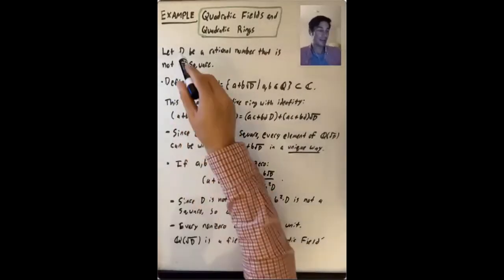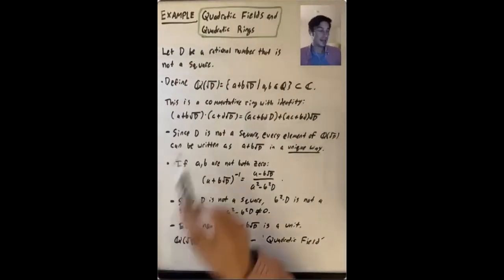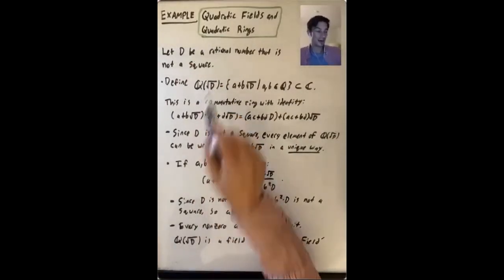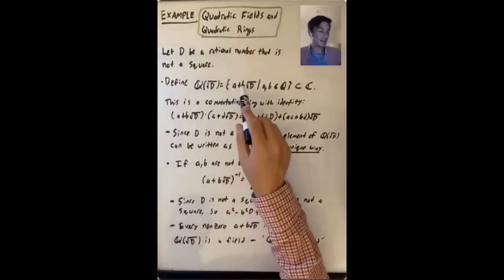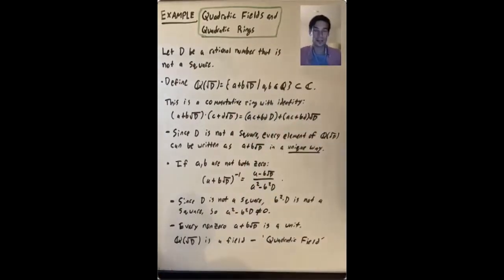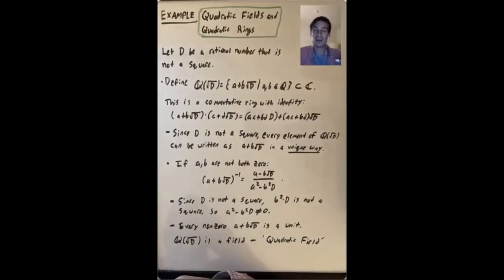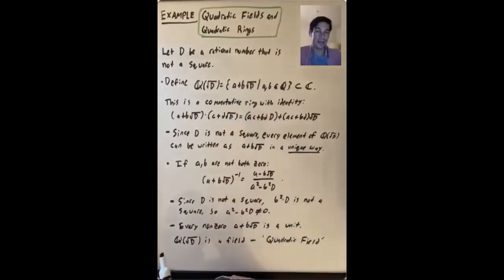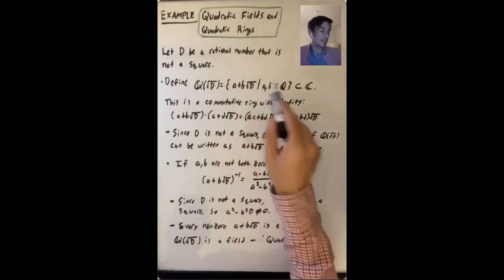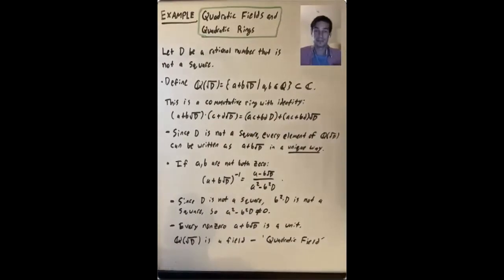Let's pick a rational number D that is not a square, and define Q adjoin square root of D to be the set of all things that can be written as A plus B times the square root of D, where A and B are rational numbers. So maybe D is something like 2 — you have A plus B√2, including real numbers that are not rational. Or maybe D is negative 1, so you have A plus Bi, containing things that are not even real numbers. No matter what D is, this is a subset of the complex numbers, and you can show it is a commutative ring with identity.